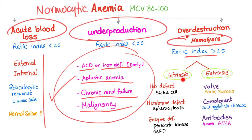Hemolytic anemia can be due to an intrinsic or intracorpuscular defect, or extrinsic or extracorpuscular defect. Intrinsic defects include hemoglobin defects such as sickle cell, membrane defects such as spherocytosis, and enzyme defects such as pyruvate kinase deficiency or glucose-6-phosphate dehydrogenase deficiency. Extrinsic causes include a valve like aortic stenosis, complement such as cold agglutinin disease — which activates complement through IgM autoantibody — and antibodies such as warm autoimmune hemolytic anemia with IgG. Cold agglutinin can involve both complement and antibodies.